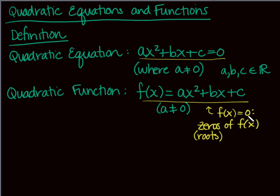Setting the function equal to zero is asking where the function values equal zero — basically, where do we cross the x-axis. Remember, x-intercepts are where y values are 0. So today we'll look at how to solve quadratic equations, and we're going to use the quadratic formula a little bit.